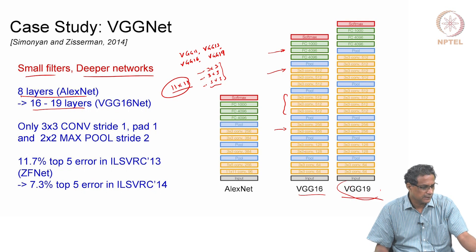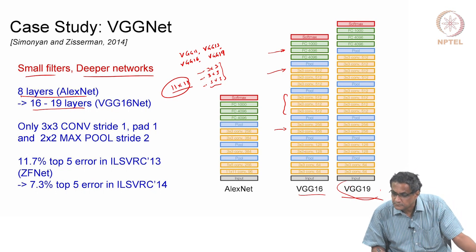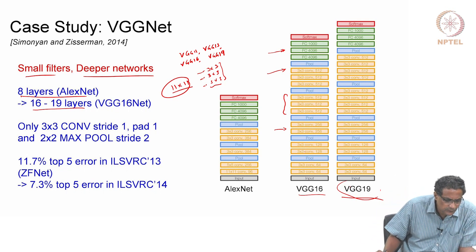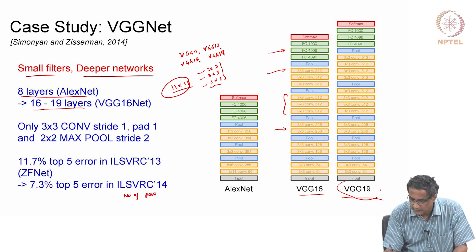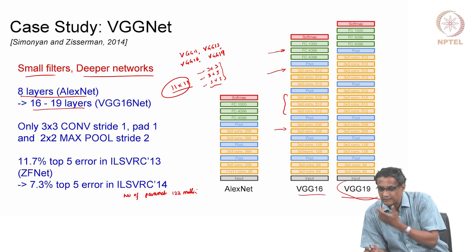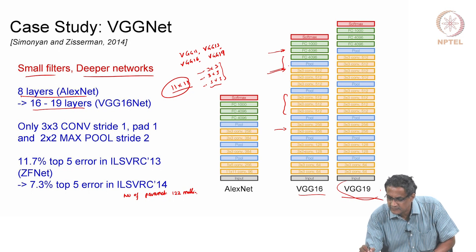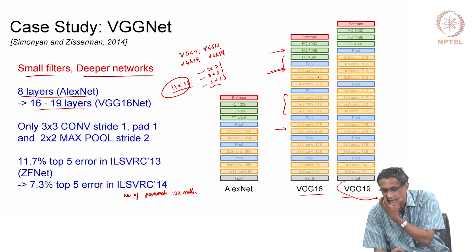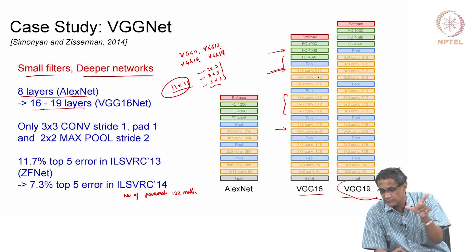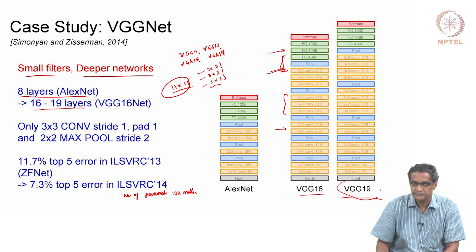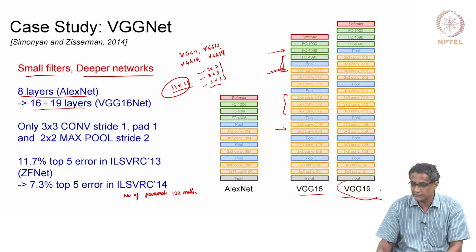The number of parameters in VGGNet is actually quite huge — 122 million, about double that of AlexNet. This comes mainly from the transition from the conv layer to the fully connected 4096-layer, which alone incurs roughly 100 million parameters (7×7 × 512 × 4096). By then, GPUs had come along, so computation was not such a big issue, and you could go from 60 million to 122 million parameters while still justifying the architecture by bringing down the error significantly.